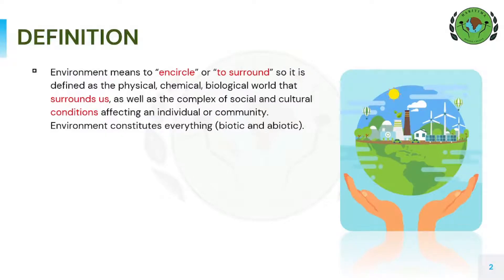Environment in literal sense means to encircle or to surround, and on the basis of this, environment is defined as the physical, chemical and biological world that surrounds us, as well as the complex of social and cultural conditions affecting an individual or a community. From this we can infer that environment consists of both biotic as well as abiotic community.